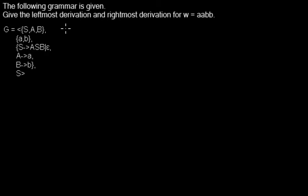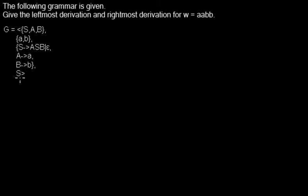In this video I'd like to show you how to get the leftmost derivation and the rightmost derivation for a word in a grammar. Here we have our grammar with the production rules and the start symbol. Here the start symbol is at the last position and it's the S.